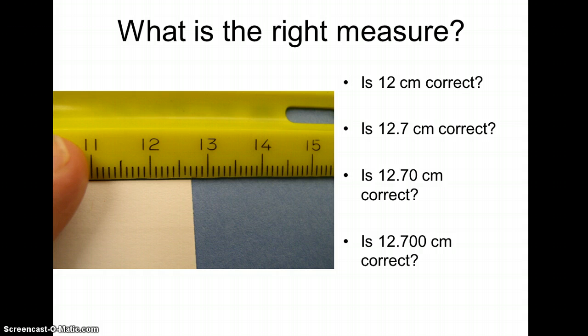So 12.7. It does look like it's right at that line. I'm pretty tempted to write 12.7. But remember, since I have tenths marked, I have to estimate one space beyond it. Now, I'm pretty convinced it's right at that seven line, so I'll write 12.70. The zero's an estimate. I'm pretty convinced, but there is a limit to my ruler. I'm not certain it's any more correct than that.